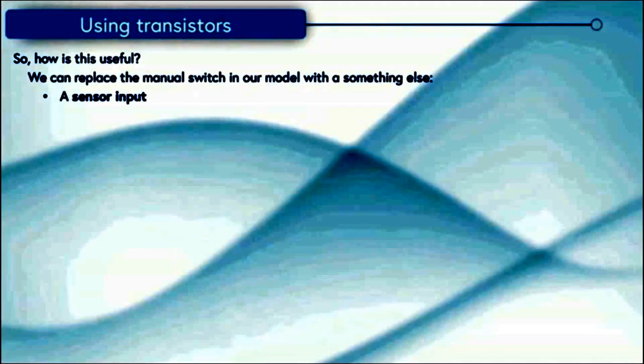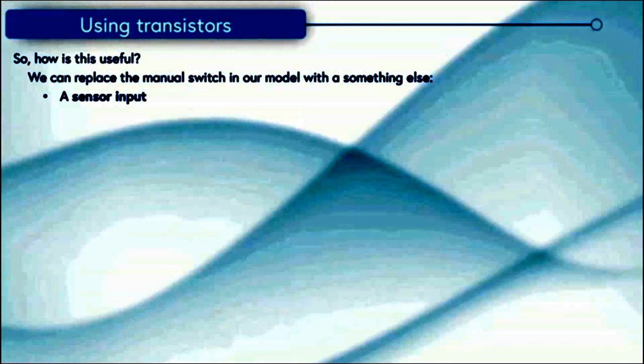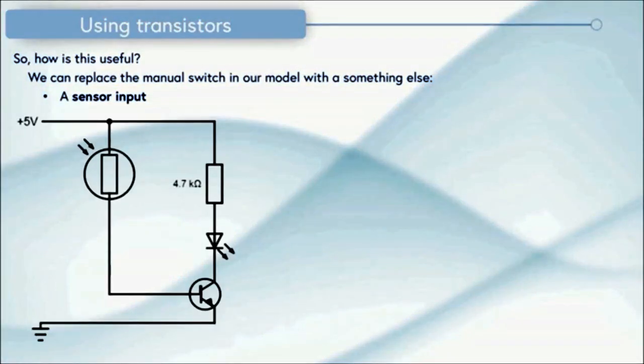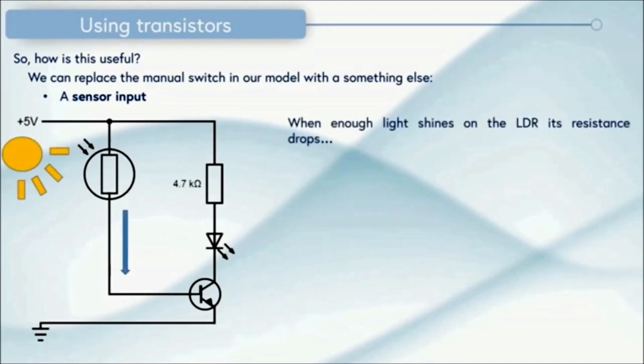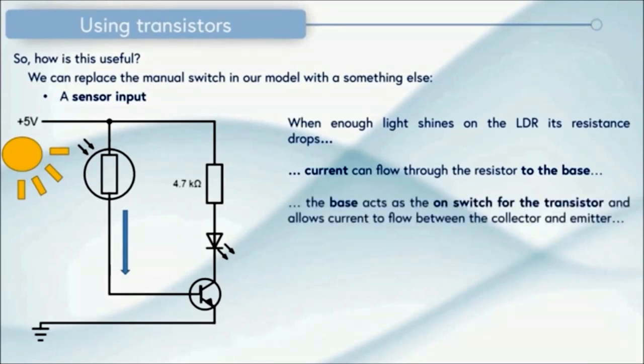So how is this useful? We can replace the manual switch in our model this time with something like a sensor input. So here's my circuit diagram and you can see on the input to the transistor I've replaced everything with a simple light dependent resistor. This component will reduce its resistance when it's exposed to lots of light. So what happens when enough light shines on the light dependent resistor, its resistance drops. The current can flow through the resistor to the base. The base then acts as the on switch for the transistor and allows current to flow between the collector and the emitter so the LED on the output side turns on.